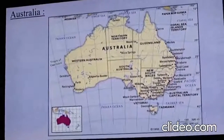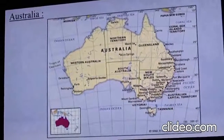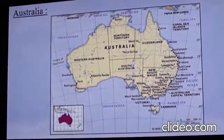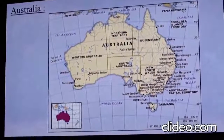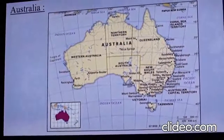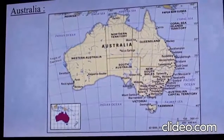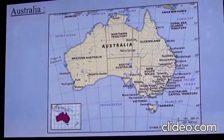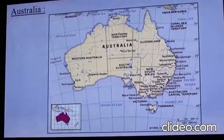This is the smallest continent — Australia. Among all the seven continents, Australia is considered to be the smallest.